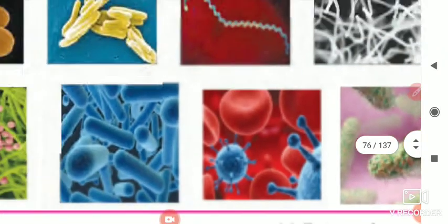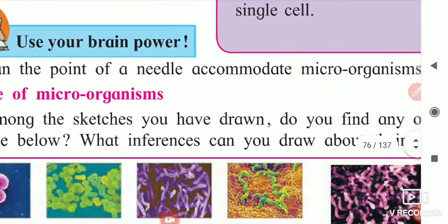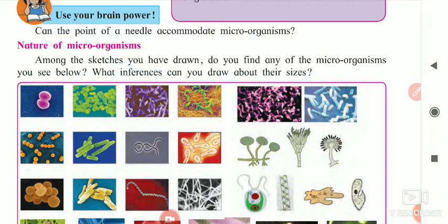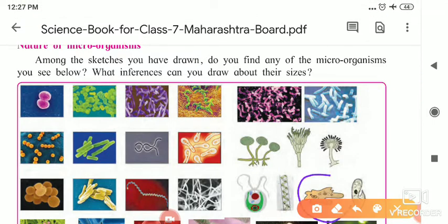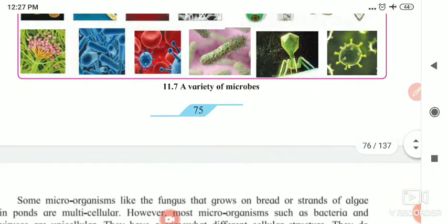This is also a virus — coronavirus shape is given here. Among the sketches you have drawn, find out any of the microorganism you see. Amoeba is present in dirty water, spirogyra is present in stagnant water, paramecium is also present in stagnant water, and lactobacillus shapes are present in buttermilk. They have varieties of shapes and varieties of sizes, and they are all microorganisms.